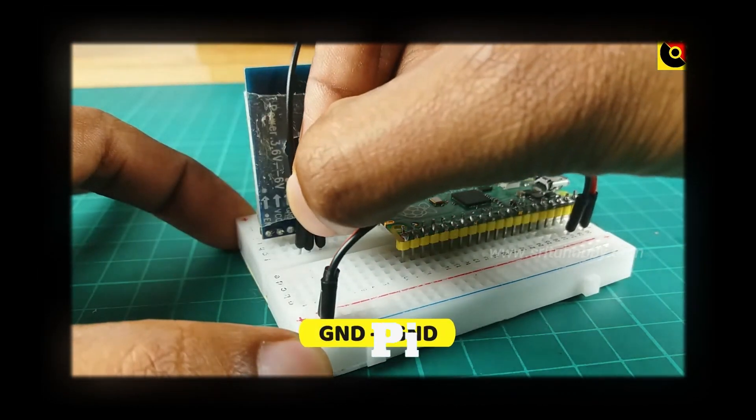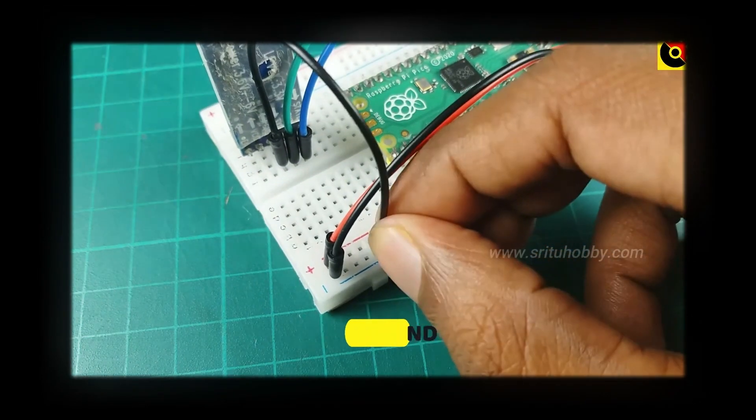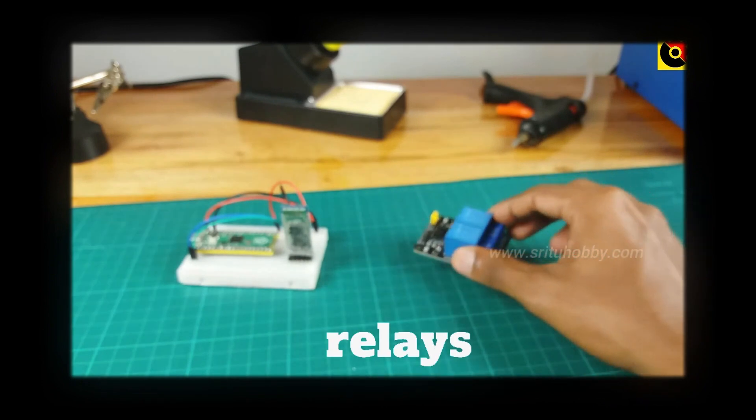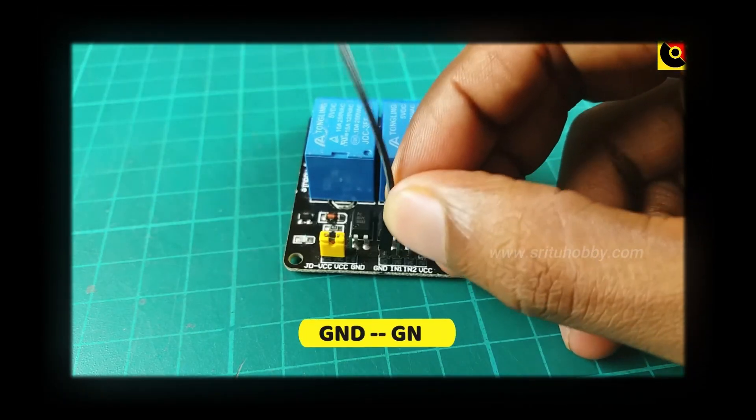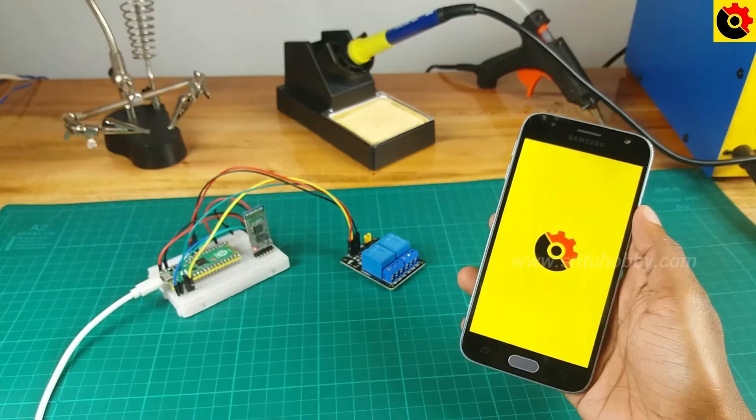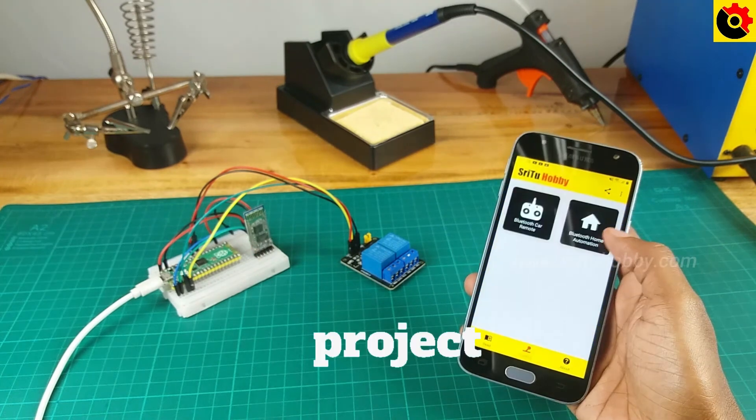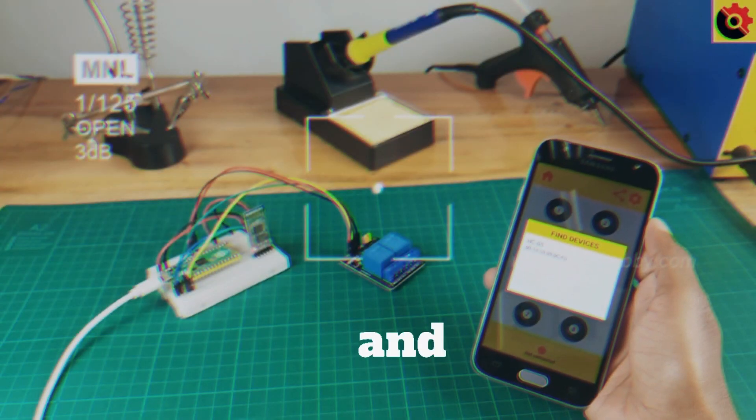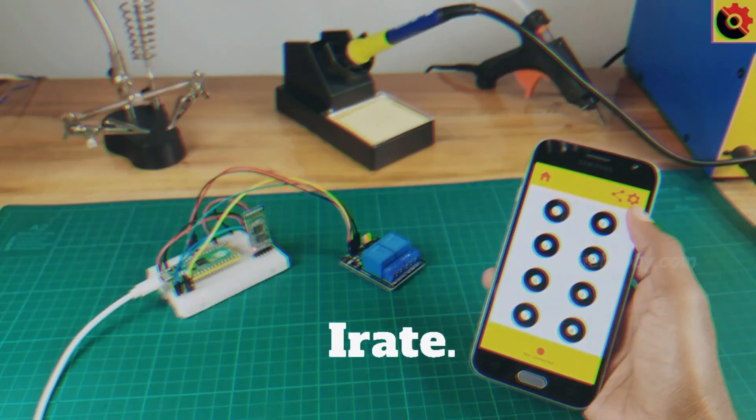The third project showcases the capabilities of IoT using the Pi Pico device. It features a module with two relays and utilizes a Bluetooth module to enable wireless control. This project is ideal for beginners who aim to gain an understanding of the fundamentals of IoT and communication protocols like MQTT.